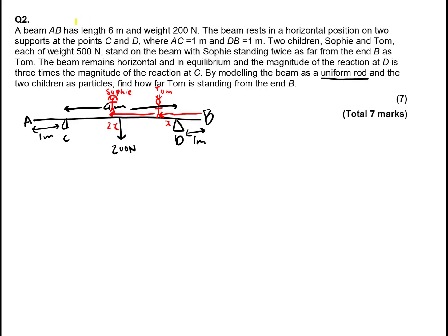Okay, let's look at this 7 mark moments question. Now you've got a beam AB has length 6 meters and weight 200 Newtons. Now, we're modeling the beam as a uniform rod. So the 200 Newtons will be in the center. So that will be exactly 3 meters in, because the whole beam is 6 meters. AC equals 1 meter, DB equals 1 meter. And you have the supports C and D.